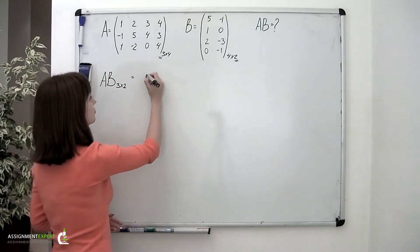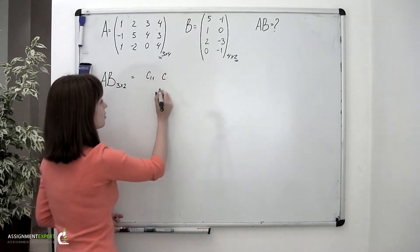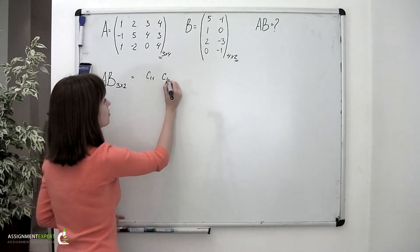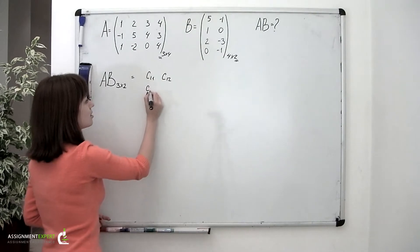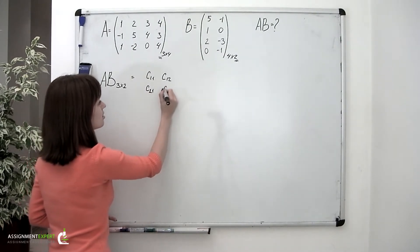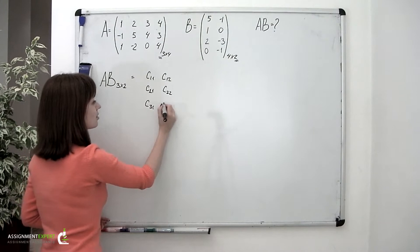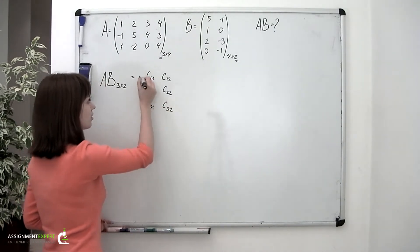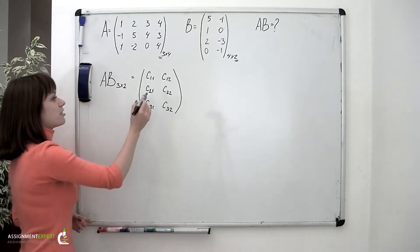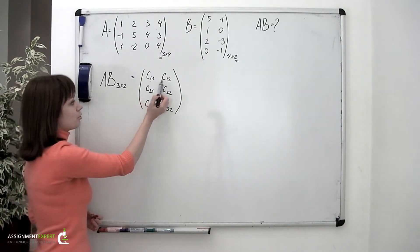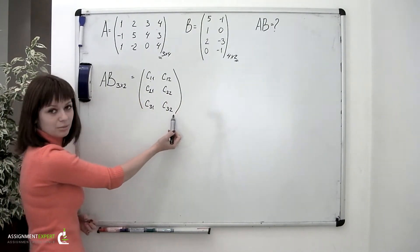The product matrix contains the elements C sub 1,1; C sub 1,2; C sub 2,1; C sub 2,2; C sub 3,1; and C sub 3,2 — keeping in mind that the first index stands for the number of the row and the second stands for the number of the column.